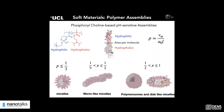We come traditionally from a polymer group, so it made sense that the first sample we imaged in liquid was what we produced in the lab. We started with a biocompatible block polymer widely used in our group as a drug delivery system. It's an amphiphilic block polymer comprised of a hydrophobic and hydrophilic block that can self-assemble in solution — a phosphorylcholine-based pH-sensitive block polymer. Depending on the ratio between the two blocks, they can form micelles, worm-like micelles, polymersomes and disc-like micelles. The work I'll show today covers worm-like micelles, polymersomes and disc-like micelles.